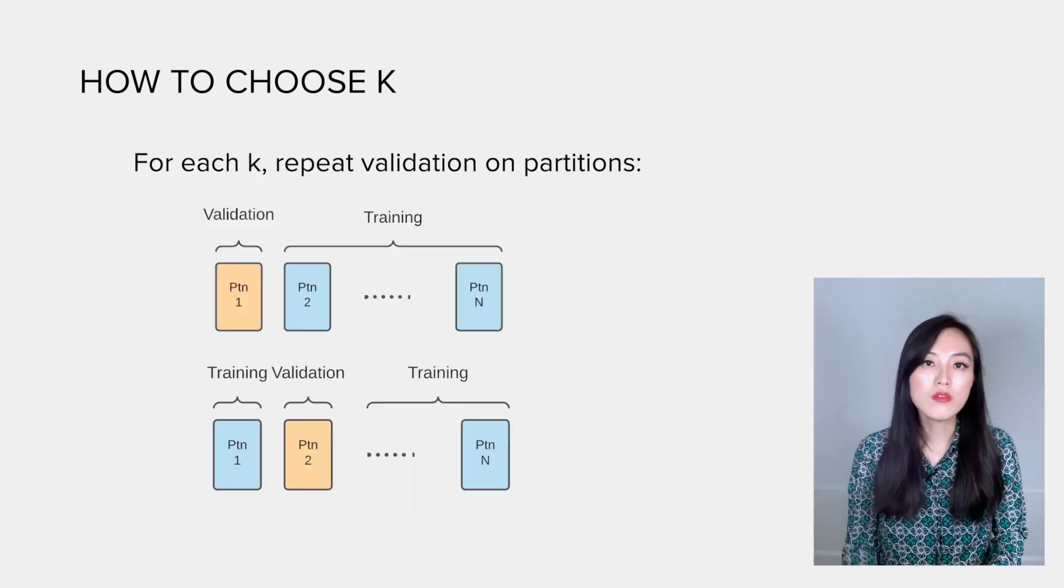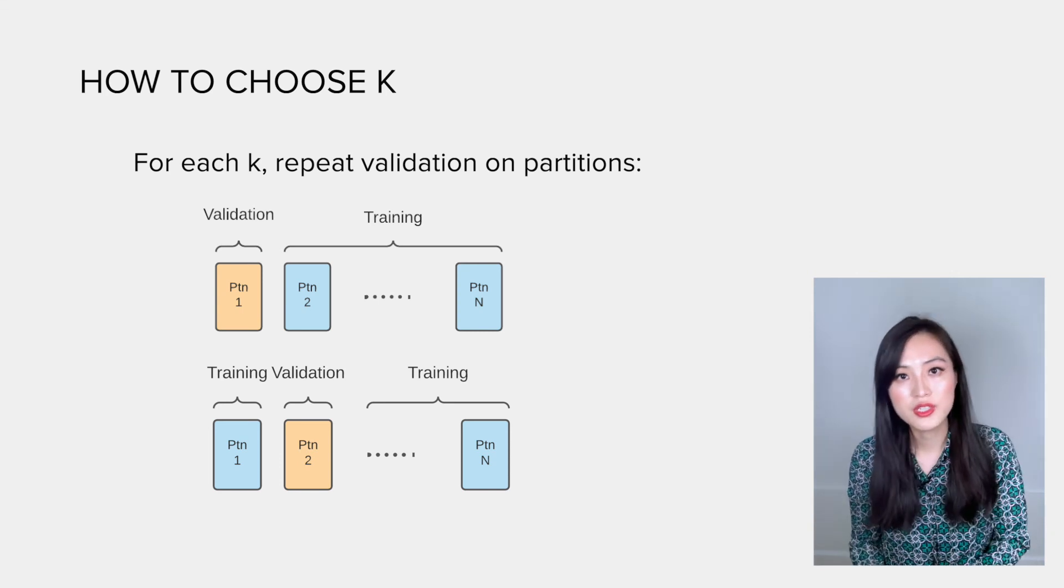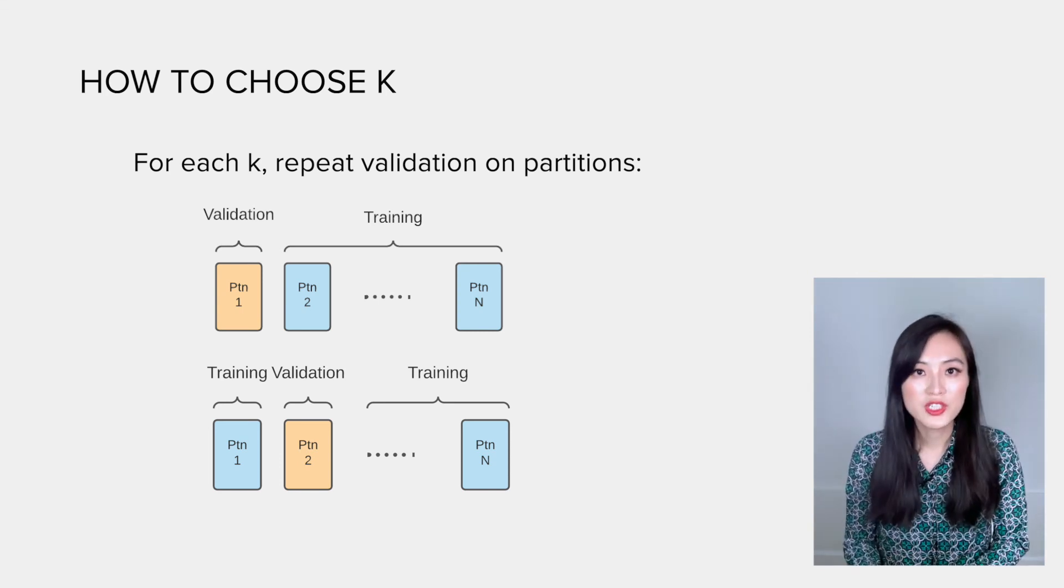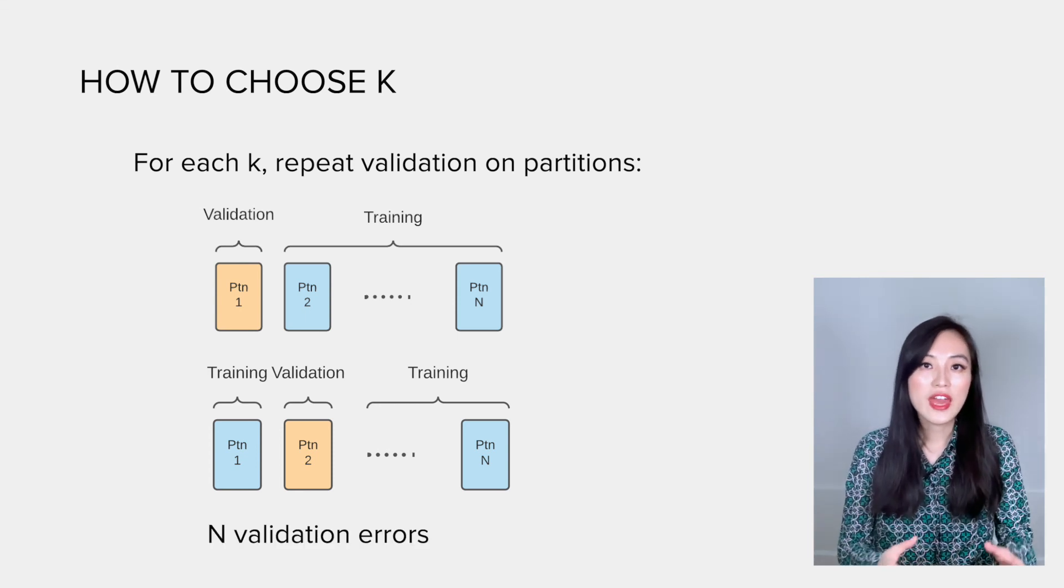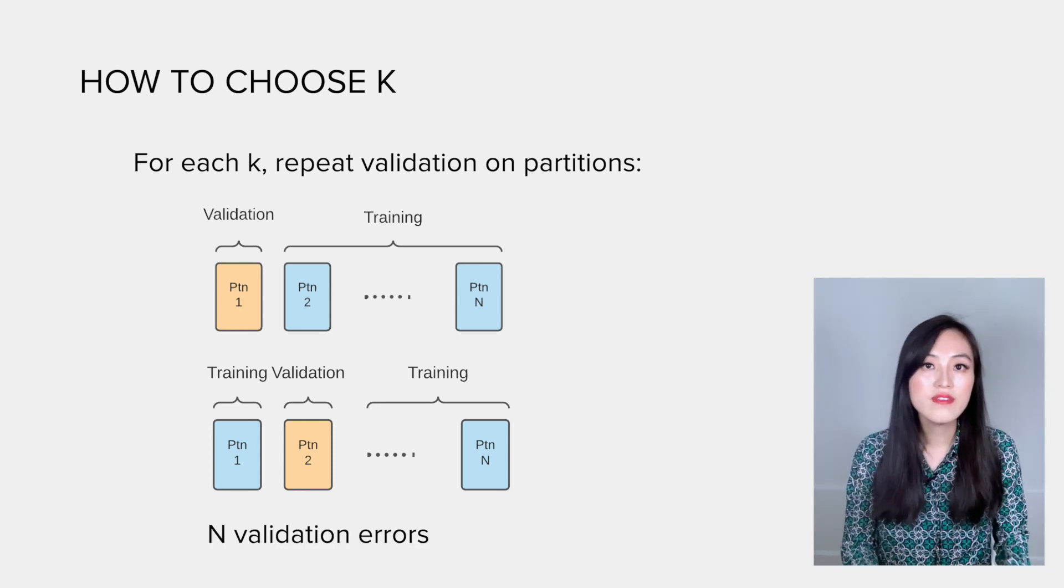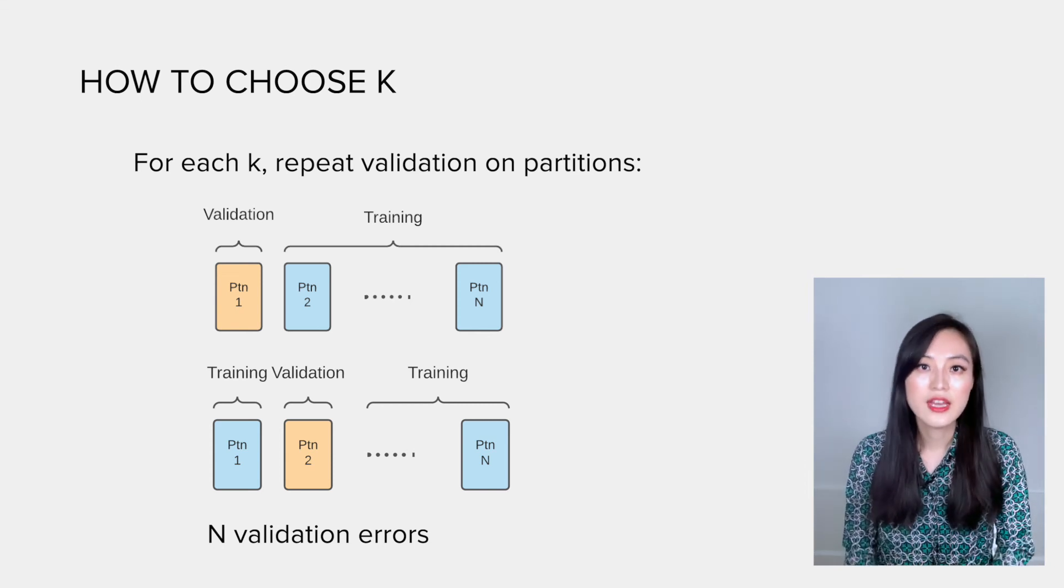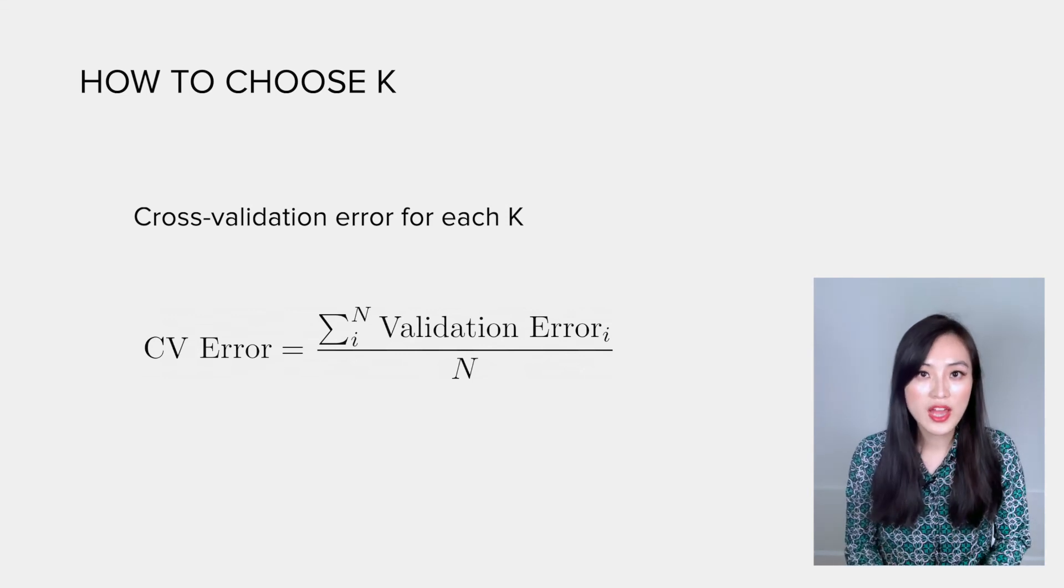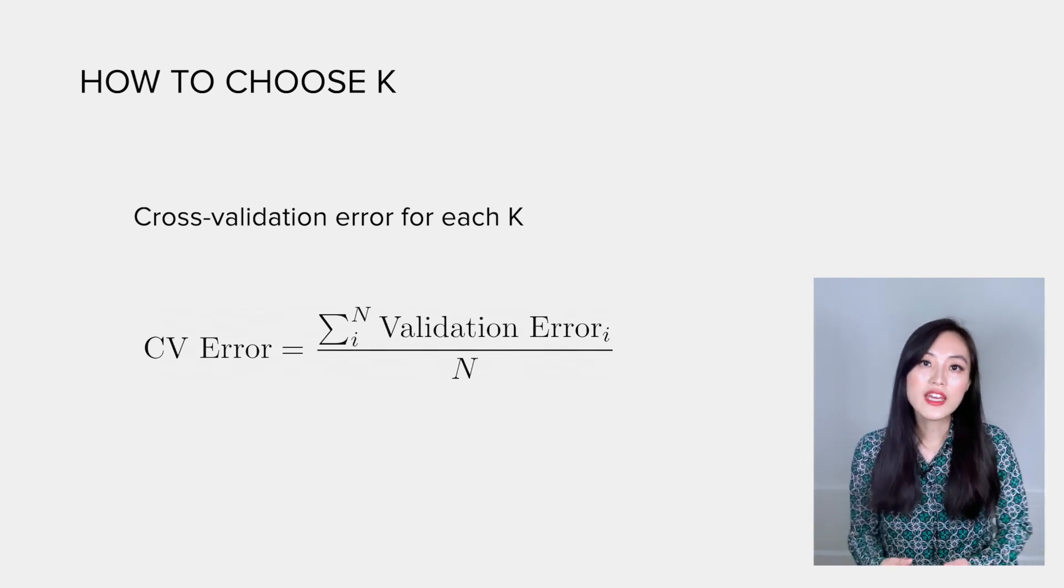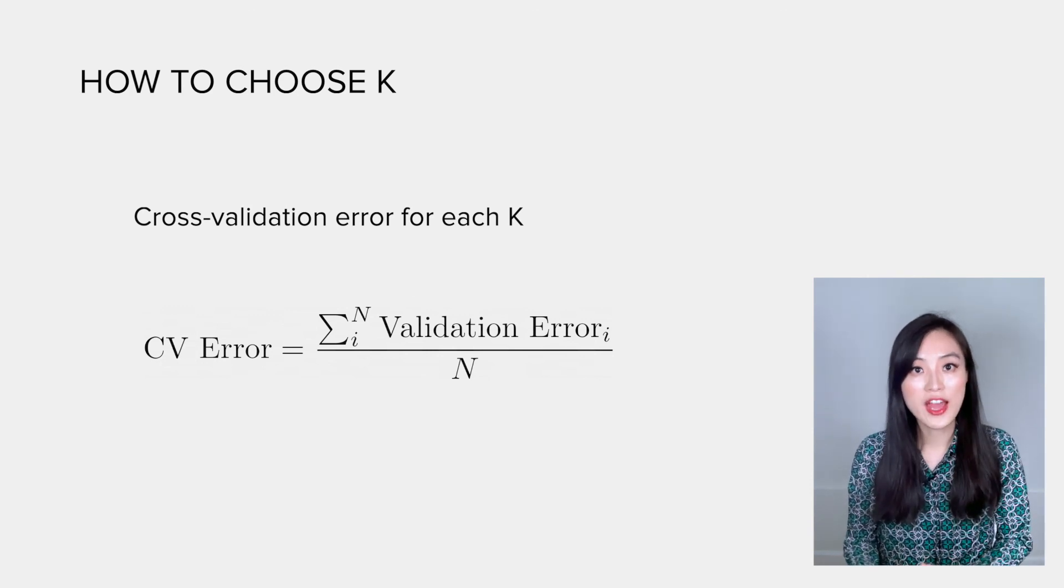We could also take a more robust approach by repeating this exercise on different partitions, meaning every partition has a chance to be a validation data set. So at the end of the process we have N validation errors associated with each candidate. The average of those errors becomes the cross-validation error of that candidate. Finally, we just need to pick the candidate with the lowest cross-validation error.